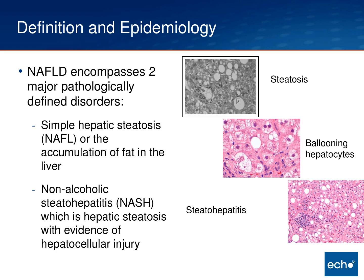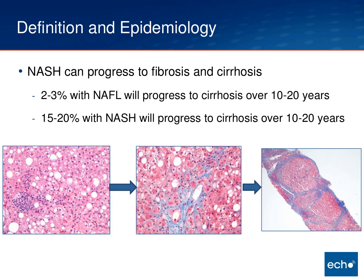NASH is really the development of these inflammatory exudates that happen in and around that fatty liver. The problem with NASH is that it can progress to fibrosis and cirrhosis. Two to three percent of people with NAFLD — so just fat — will progress to cirrhosis over 10 to 20 years.